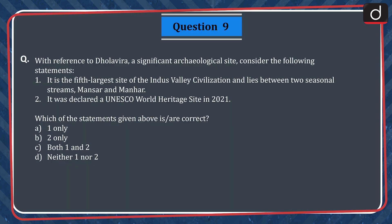Question 9. With reference to Dholavira, a significant archaeological site, consider the following statements. 1. It is the fifth largest site of the Indus Valley Civilization and lies between two seasonal streams, Mansar and Manhar. 2. It was declared a UNESCO World Heritage Site in 2021. Which of the following statements is correct? A. One only. B. Two only. C. Both 1 and 2. D. Neither one nor two.